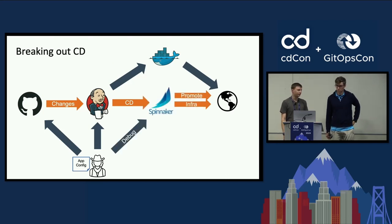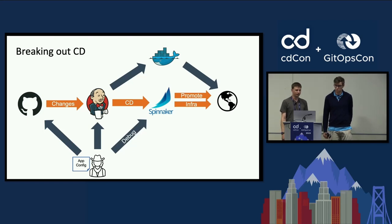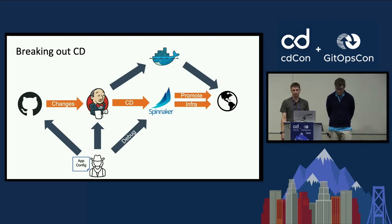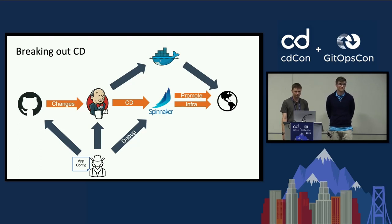But over time, our CD needs diverged from CI, as I'm sure many of you have also experienced. We needed complex functionality to implement promotion workflows, auto-scaling, and solve regional deployment strategies. To solve this, we adopted Spinnaker to manage our CD processes and kept Jenkins owning CI.